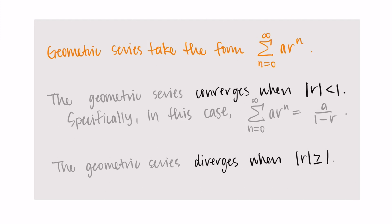So remember, geometric series take the form of the sum from n equals 0 to infinity of ar^n. We say that the geometric series converges when the absolute value of r is less than 1. Specifically, in this case, we can conclude the infinite series is equal to a/(1-r).